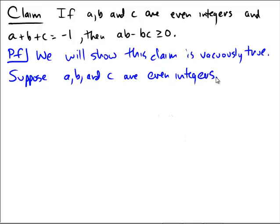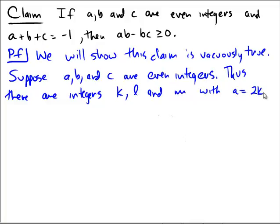Thus, there are integers k, l, and m with a equals 2k, b equals 2l, and c equals 2m.